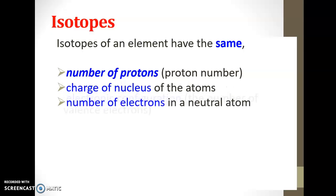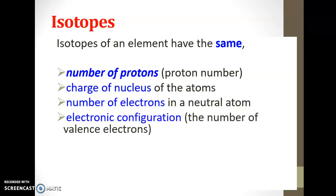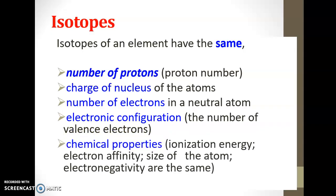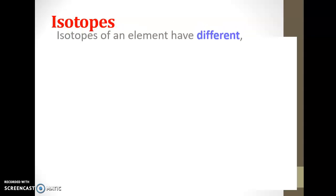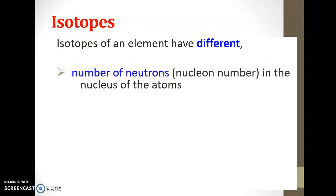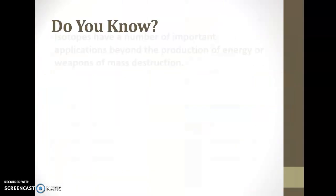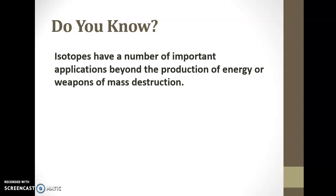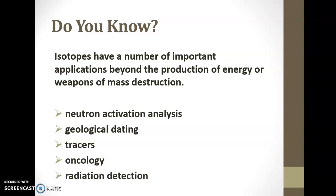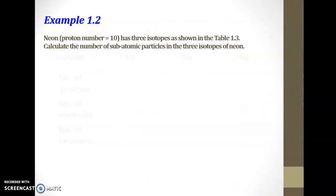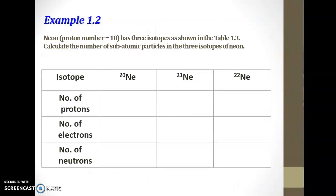Isotopes of an element will have the same number of protons, charge of the nucleus, number of electrons, electronic configuration, and chemical properties. But, they have different number of neutrons, relative isotopic mass, and physical properties. The applications of isotopes can be as neutron activation analysis, as traces in cancer technology, and radiation detection.